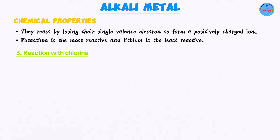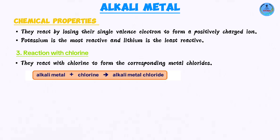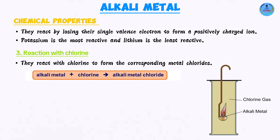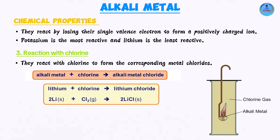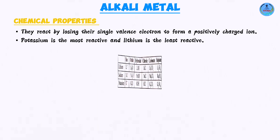When alkali metals are heated and reacted with chlorine gas, they form corresponding chlorides. Lithium plus chlorine gives lithium chloride; sodium plus chlorine gives sodium chloride; potassium plus chlorine gives potassium chloride. You will observe white solids being formed in each case.